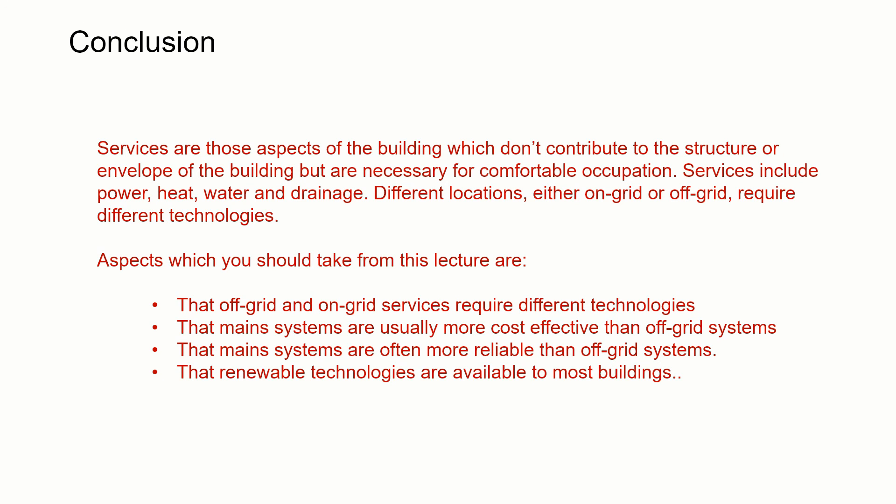In conclusion, services are aspects of a building that don't hold it up or keep it watertight, but we need them for comfort and to occupy the building. The key takeaways are: off-grid and on-grid services require different technologies; mains services are usually more cost-effective than off-grid services due to installation charges, ongoing maintenance, and shared costs; mains systems are generally more reliable with external maintenance; and renewable technologies are available to most buildings. Thank you for listening — we'll continue in the next lecture.